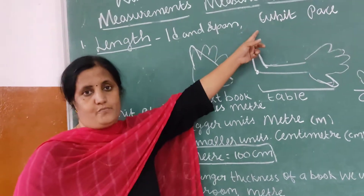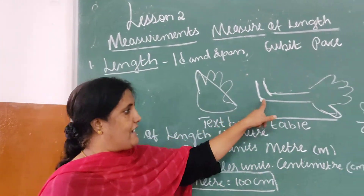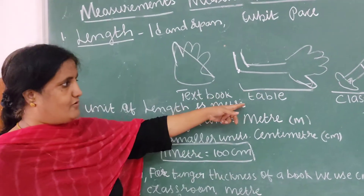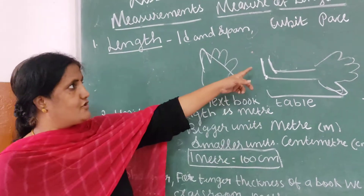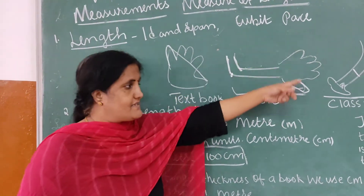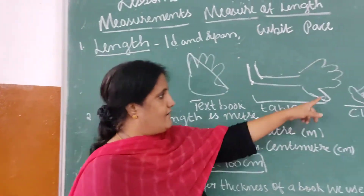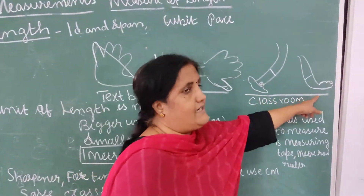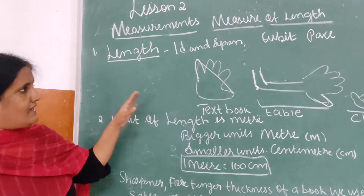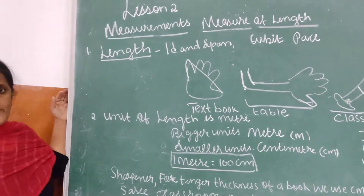The next unit is cubit. Cubit is nothing but the distance between the elbow and the small finger. To measure a table they use the cubit. And the last one is space — the distance between two feet, from the toes here to there. So these are the three units of length used in olden days.